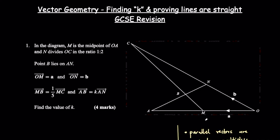To start, apply the information to the diagram — there will always be a diagram with these types of GCSE questions. OM equals a and ON equals b, already marked on the diagram. M is the midpoint of OA, so if OM is vector a, then MA must also be vector a. N divides OC in ratio 1 to 2, so if ON is b, then NC must be 2b. They also tell us MB equals a fifth MC, and AB equals k·AN.